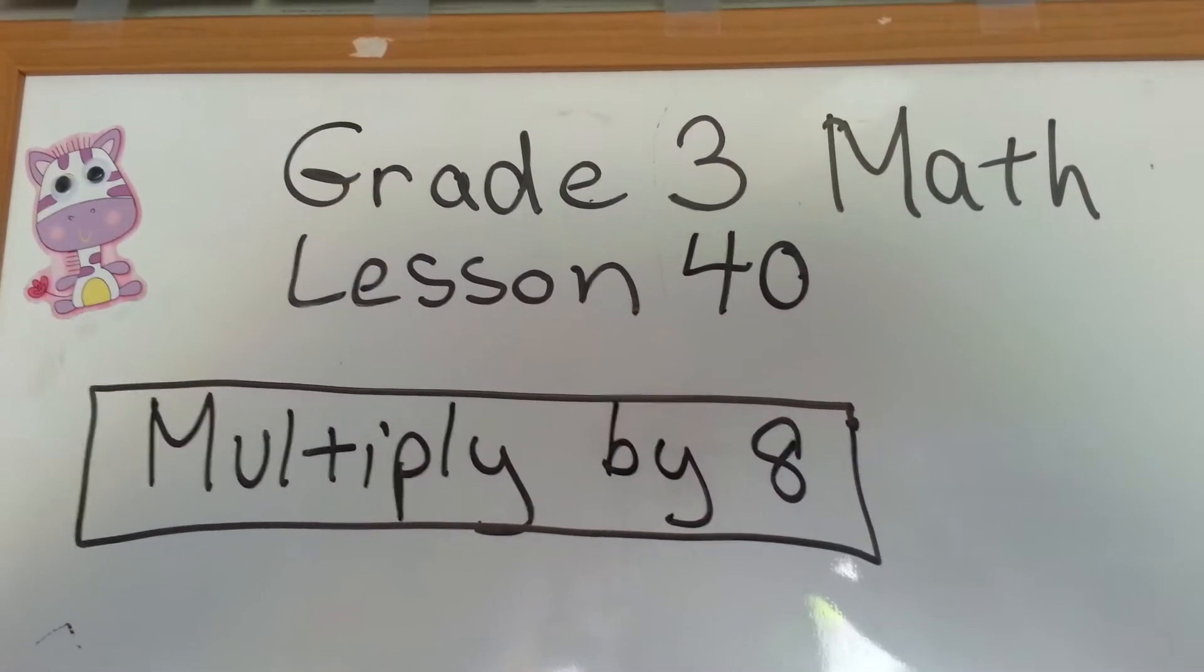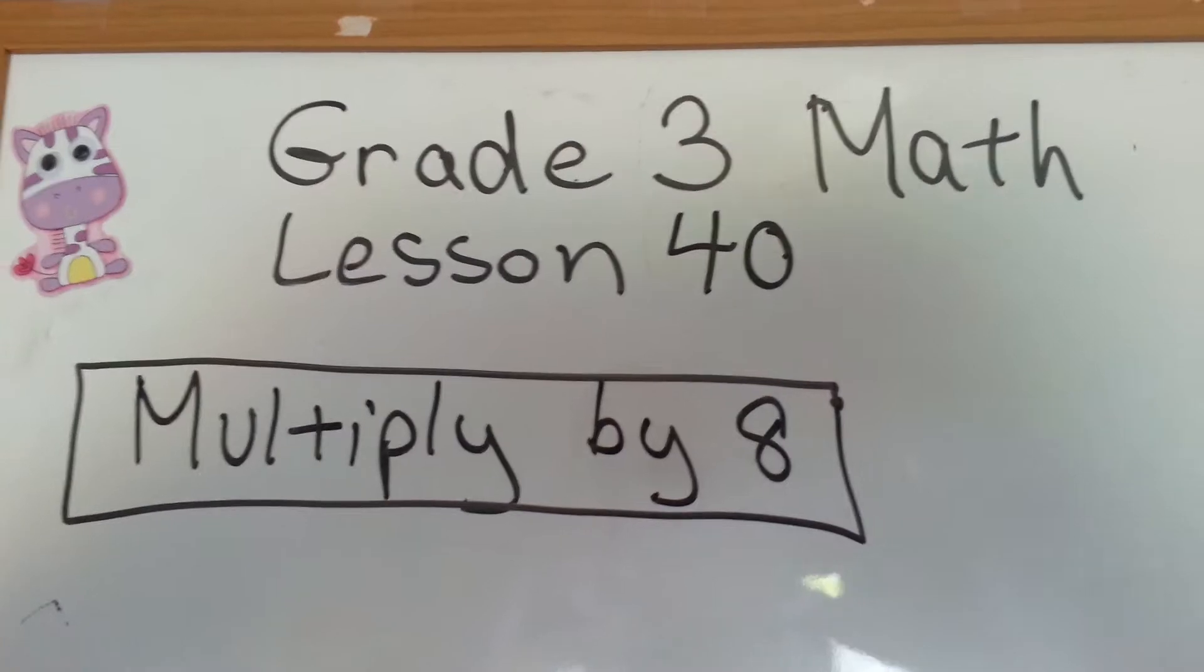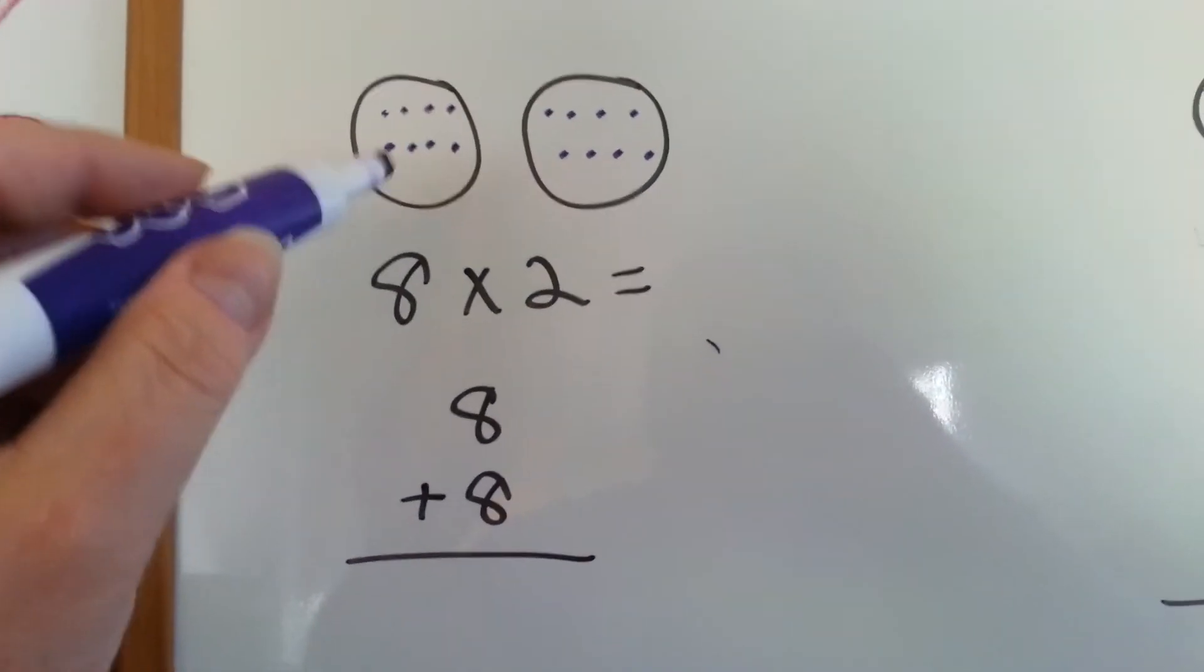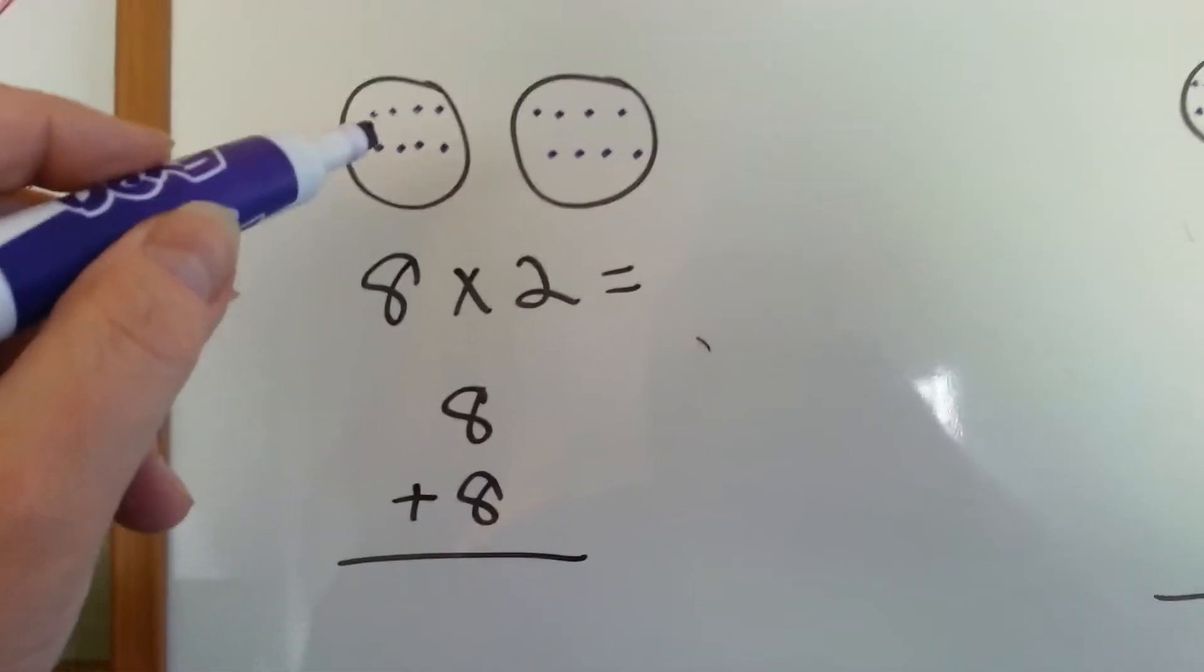Grade 3 math lesson 40: Multiply by 8. When you multiply by 8, what you're doing is counting by eights. You're adding a bunch of eights together.